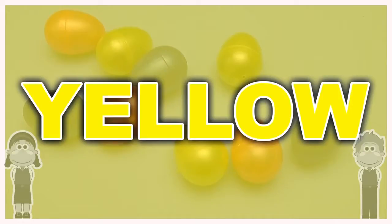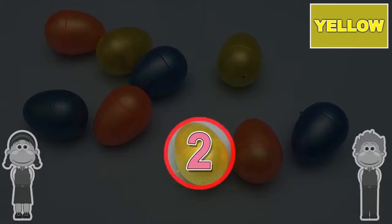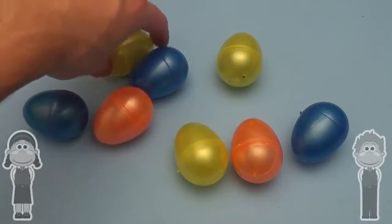Yellow. Yellow. Where are the yellow eggs? One, two, three. Three yellow eggs. Three yellow eggs.